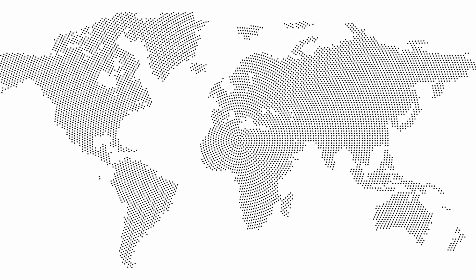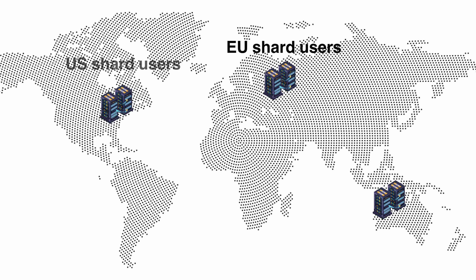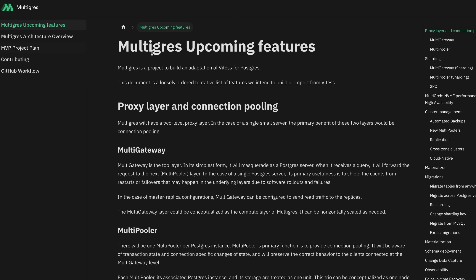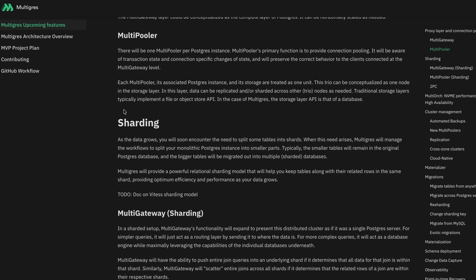Sharding essentially breaks your database into smaller chunks — smaller databases. That could be based on region, saving European users in a European shard and US users in a US shard. It can break down even further: users with names A–M in one shard and M–Z in another. This improves query speed and solves the problem of one gigantic database that just keeps growing. That's why I'm excited about Supabase Select where Multigres has all this sharding built in — you can spin up multiple instances and it's all handled for you.